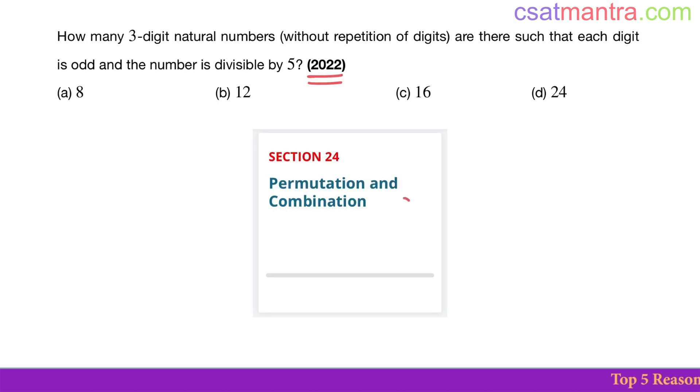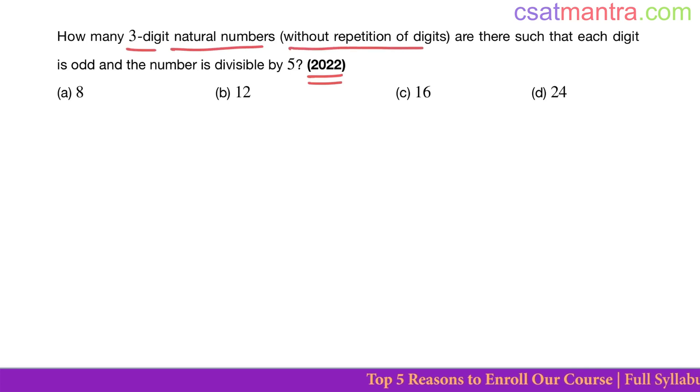This is a 2022 question based on permutation and combination. How many three-digit natural numbers without repetition of digits are there such that each digit is odd and the number is divisible by 5?